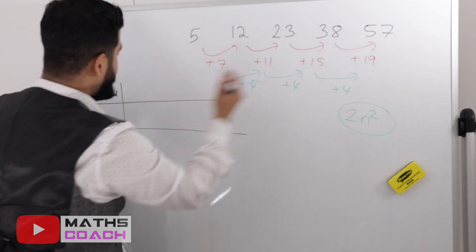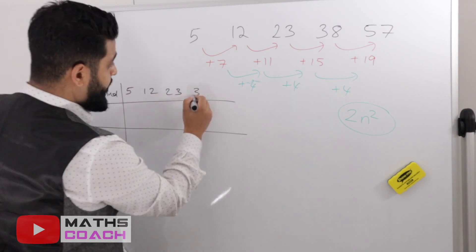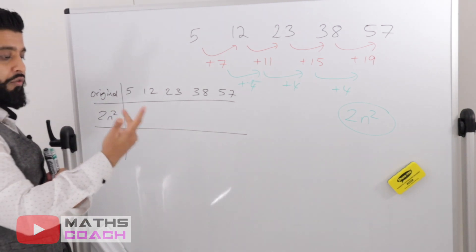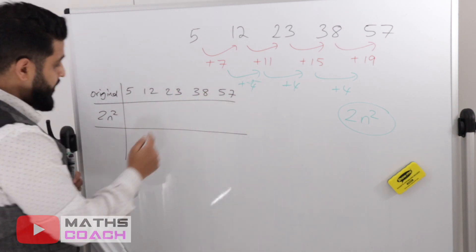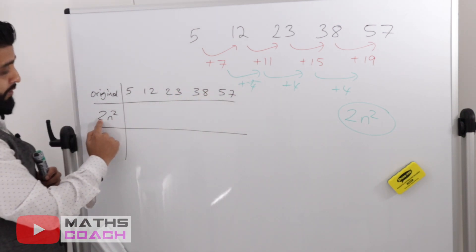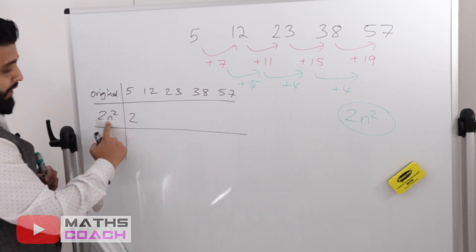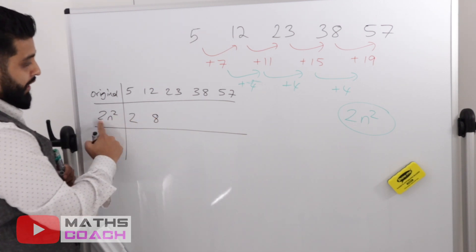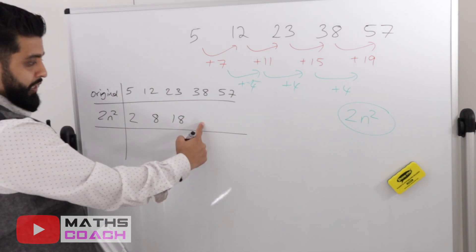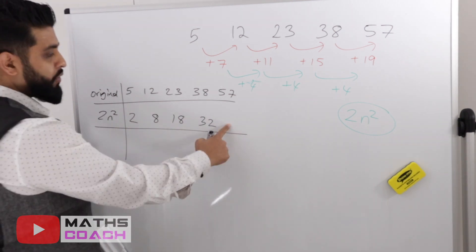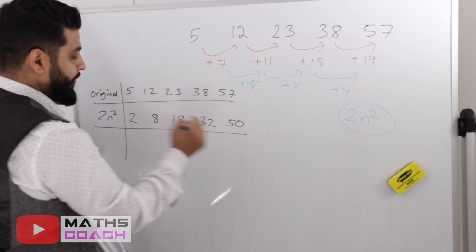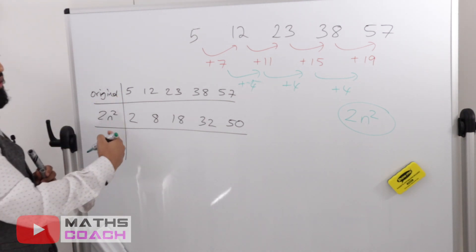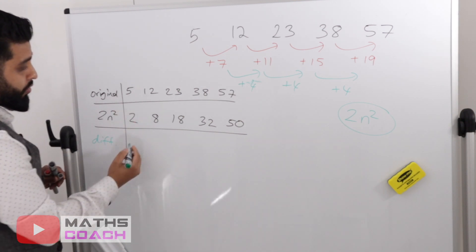Draw the table with the original sequence: 5, 12, 23, 38, 57. Below that, write 2n squared and substitute n as 1 to 5: 1 squared times 2 is 2, 2 squared is 4 times 2 is 8, 3 squared is 9 times 2 is 18, 4 squared is 16 times 2 is 32, 5 squared is 25 times 2 is 50.